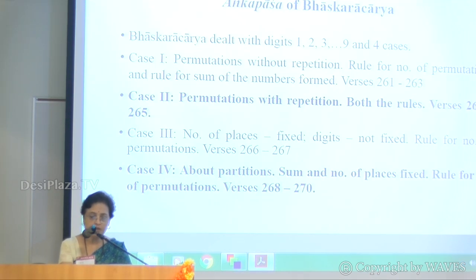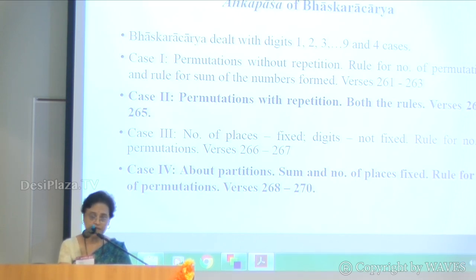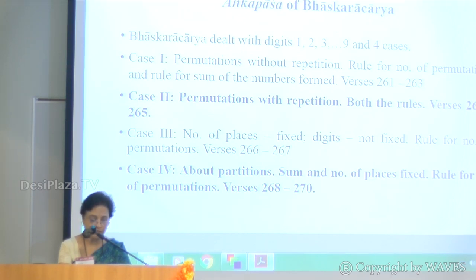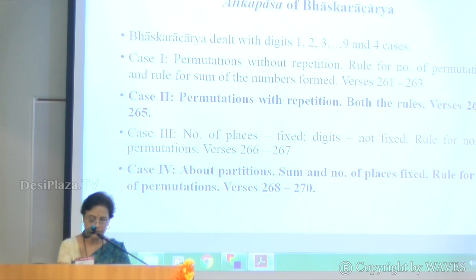Bhaskaracharya is considered one of the most innovative mathematicians of India. His contribution to Indian and world mathematics is undeniable. He dealt with digits 1 through 9, excluding 0, and handled four cases. Case 1 is about permutations without repetition, for which he gave two rules: the first for the number of permutations and the second for the sum of the numbers formed.